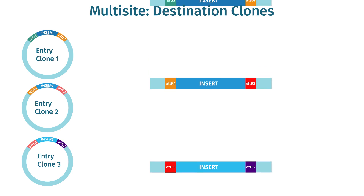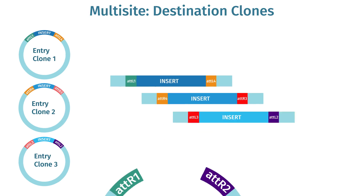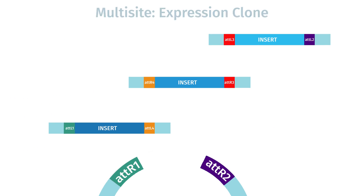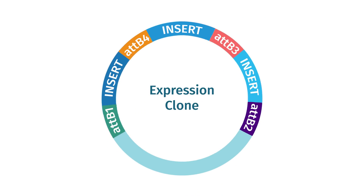These entry clones are used in the LR reaction. The corresponding AT sites on the entry clones and the destination vector must align correctly. The compatible flanking sequences are recombined and incorporated into the desired destination vector to create the final expression clone containing the multiple DNA fragments of interest.